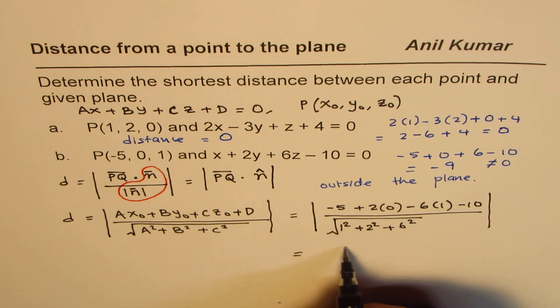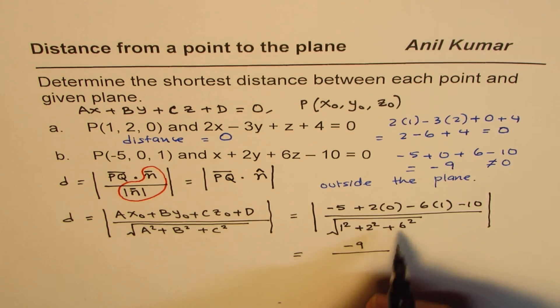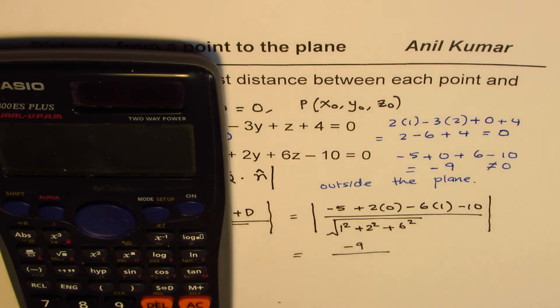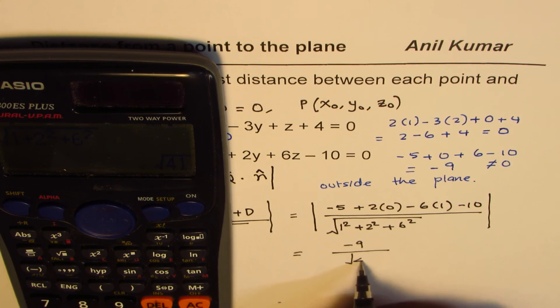So, we get the numerator part divided by square root of the normal vector, which is 1 square plus 2 square plus 6 square. And that gives you, we calculate the numerator as minus 9 over square root of 1 plus 4 plus 36, which is square root of 41.